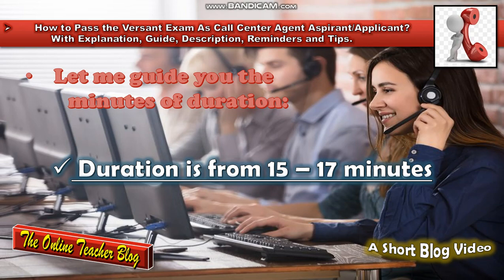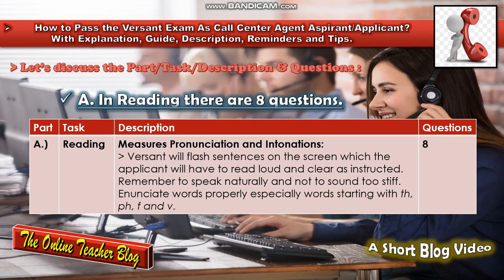In Part A, Reading, there are eight questions. Reading measures pronunciation and intonation. Versant will flash sentences on the screen which the applicant will have to read aloud and clear as instructed. Remember to speak naturally and not to sound too stiff.